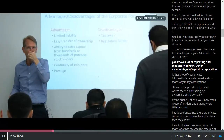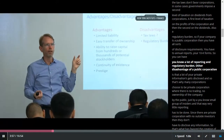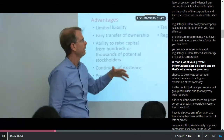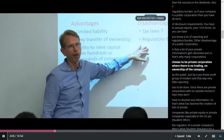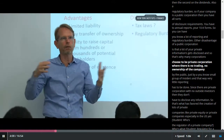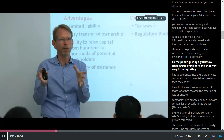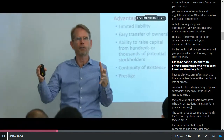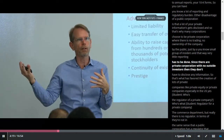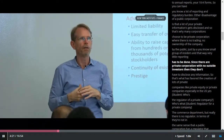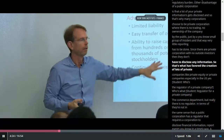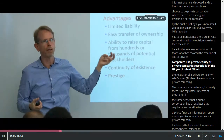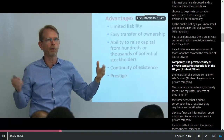Another disadvantage of a public corporation is that a lot of your private information gets disclosed. That's why many corporations choose to be private corporations, where there's no trading or ownership of the company by the public — just by a small group of insiders. That way, very little reporting has to be done. Since they're a private corporation with no outside investors, they don't have to disclose any information. This has favored the creation of lots of private companies, like private equity or private companies, especially in the U.S.